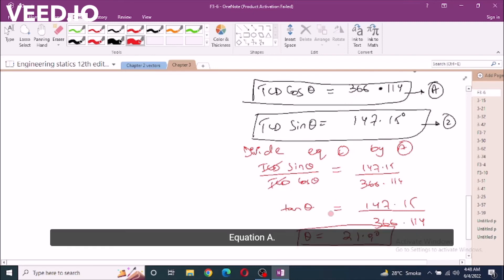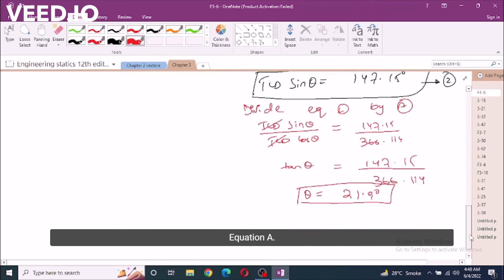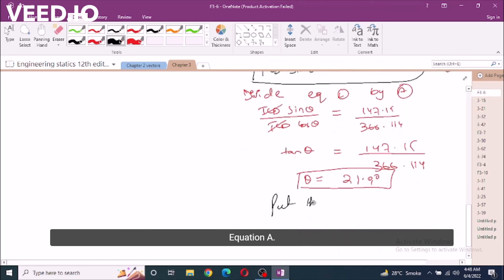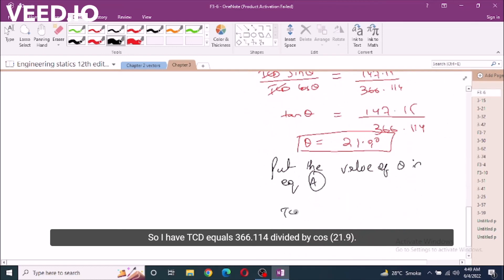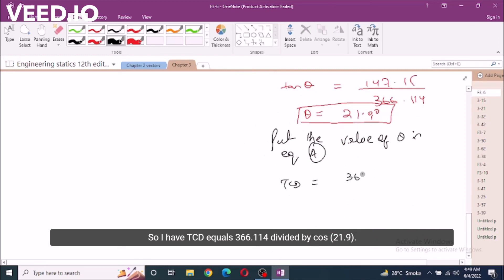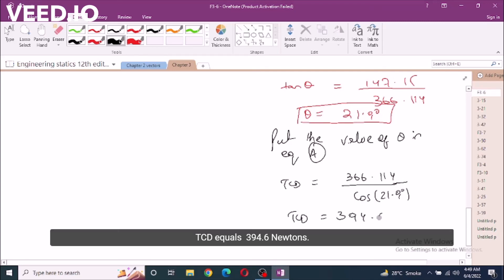So I have TCD equals 394.6 newtons. This is our third answer.